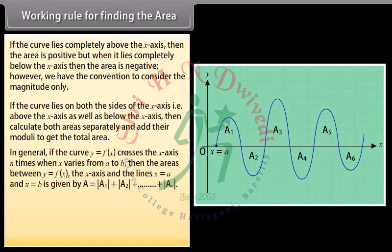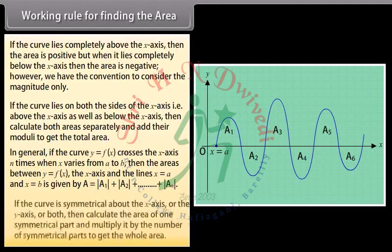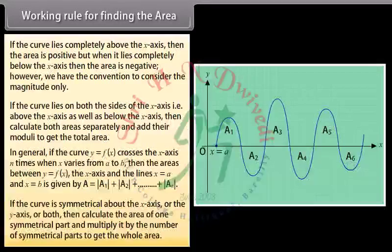In general, if the curve y = f(x) crosses the x-axis n times when x varies from a to b, then the area between y = f(x), the x-axis, and the lines x = a and x = b is given by A = |A₁| + |A₂| + ... + |Aₙ|. If the curve is symmetrical about the x-axis, y-axis, or both, then calculate the area of one symmetrical part and multiply by the number of symmetrical parts to get the whole area.